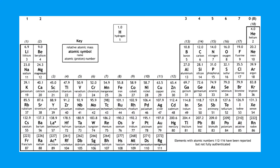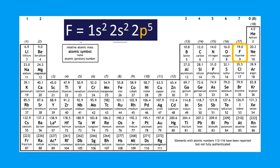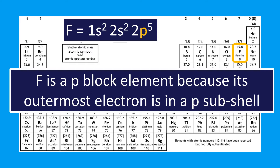Let's look at why that is. If we look at fluorine as an example, the electron configuration for fluorine is 1s² 2s² 2p⁵. Fluorine is classed as a p block element because its outermost electrons are in the p subshell, so it's classed as a p block element.